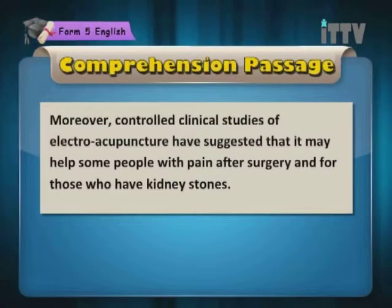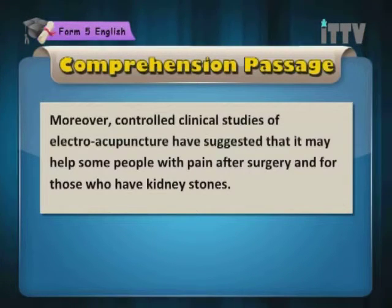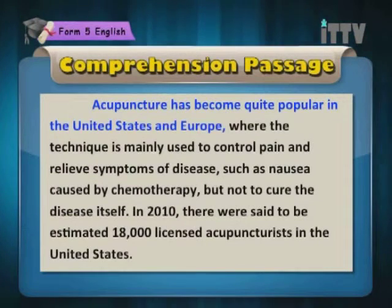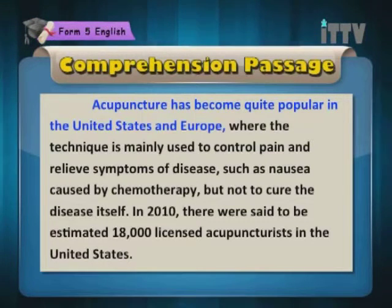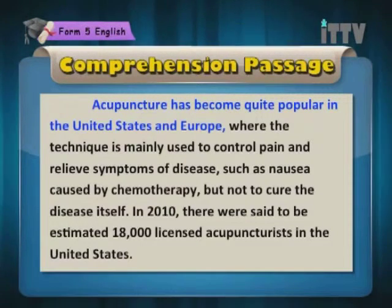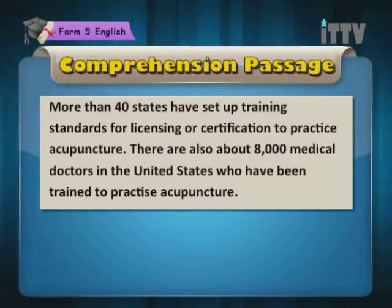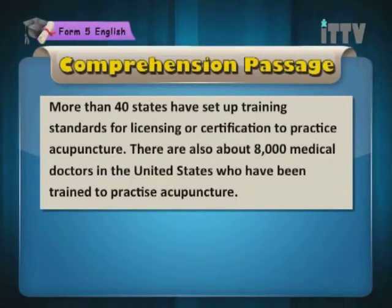Moreover, controlled clinical studies of electroacupuncture have suggested that it may help some people with pain after surgery and for those who have kidney stones. Acupuncture has become quite popular in the United States and Europe where the technique is mainly used to control pain and relieve symptoms of disease, such as nausea caused by chemotherapy, but not to cure the disease itself. In 2010, there were an estimated 18,000 licensed acupuncturists in the United States, and more than 40 states have set up training standards for licensing or certification. There are also about 8,000 medical doctors in the United States who have been trained to practice acupuncture.